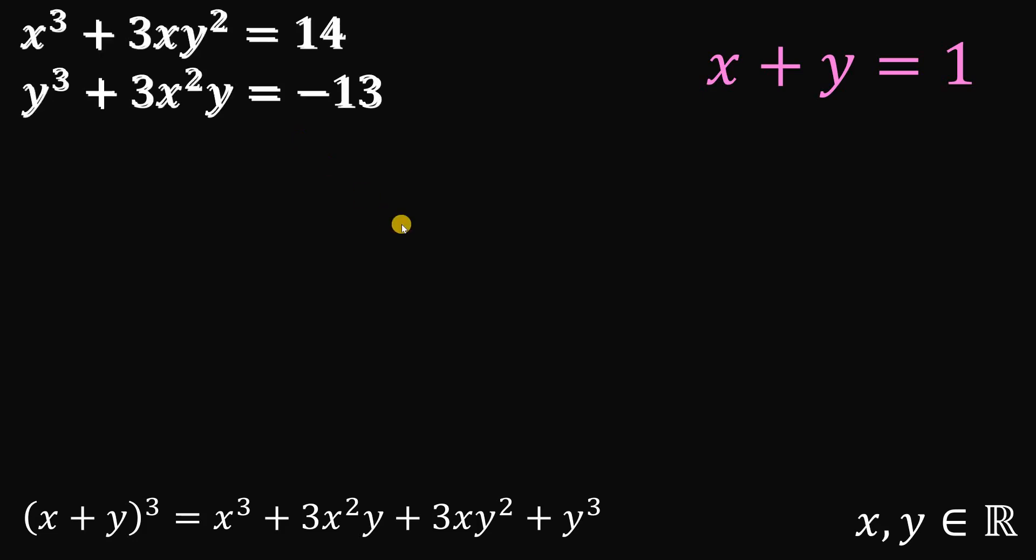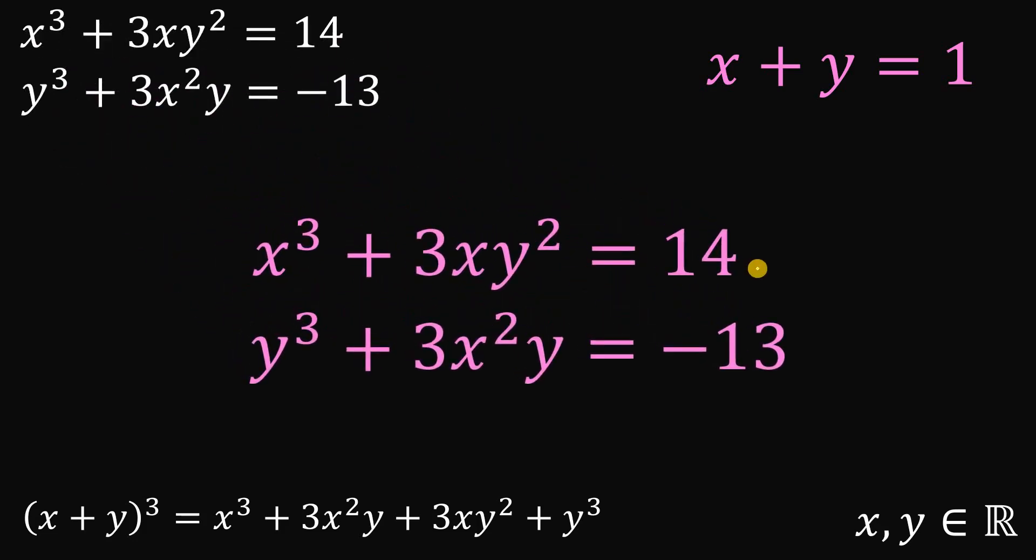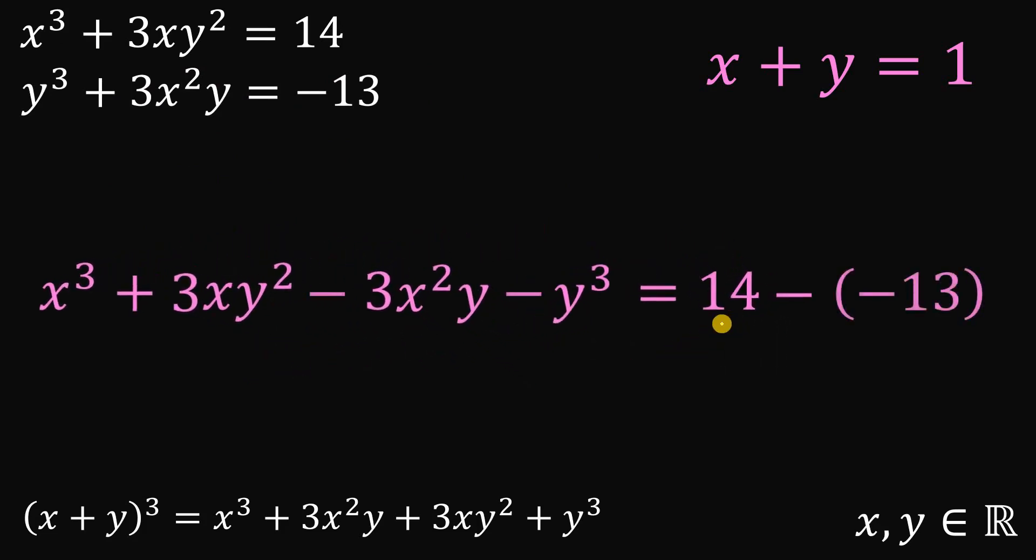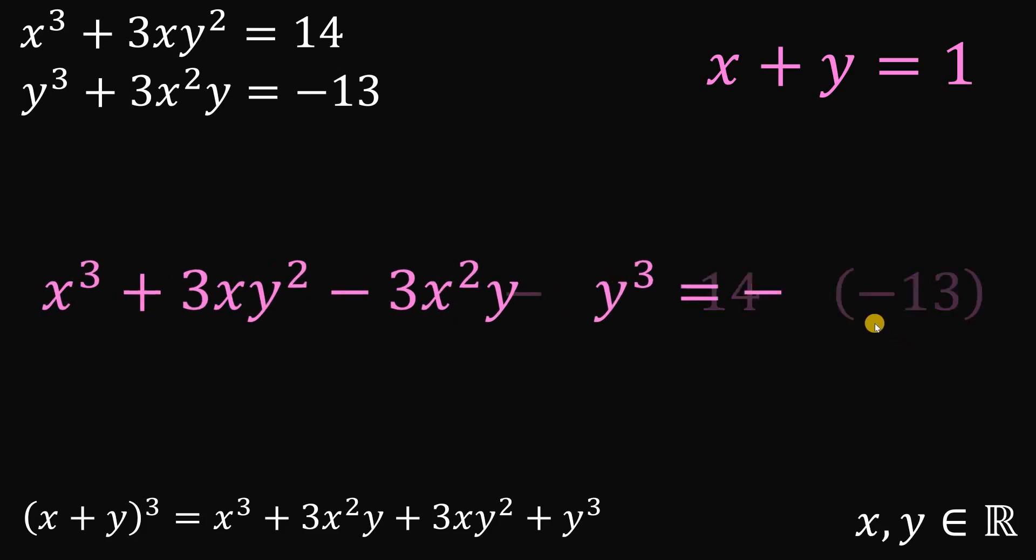And again, let's get the two equations that we have. Instead of adding, why not subtract these two equations like this. And 14 minus negative 13 is just positive 27.